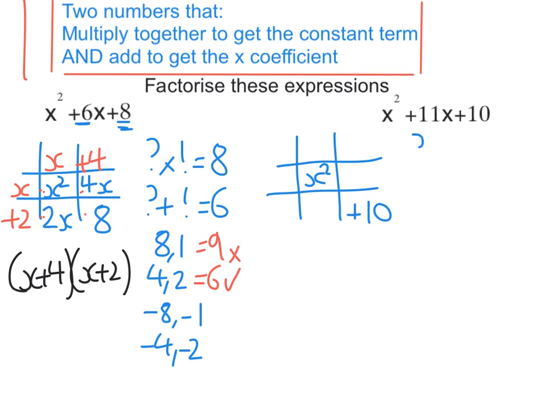Now I'm looking for two numbers that multiply to get the constant, 10, the one that doesn't have the x with it, and those two numbers must also add to get the coefficient of x, and that's 11.